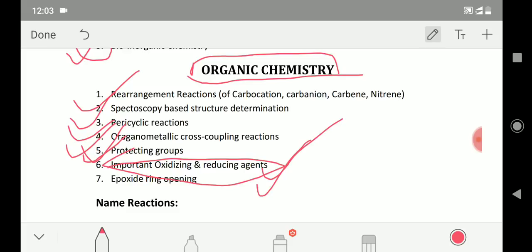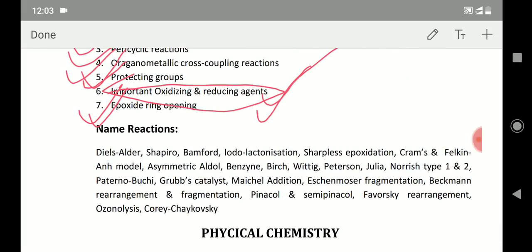The epoxide ring opening and all the other stereochemical factors in the cyclohexane ring system or normal systems, their stability, anomeric effect - all these things you have to revise. Now if I talk about specific name reactions, because people requested me to suggest some name reactions, here are some that you should definitely do.